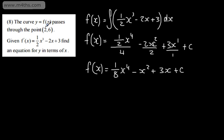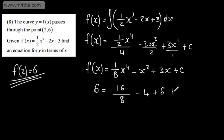What we've got here now is 2, 6, this point 2, 6. So what we can say here is that f of 2 will be equal to 6. So all I'm going to do is simply now substitute in x is 2 and set the left-hand side to 6. So that's going to give me now 2 to the power of 4, which is going to give me 16 over 8, minus 2 squared, which is 4, plus 3 lots of 2, which is going to give me 6 plus c.